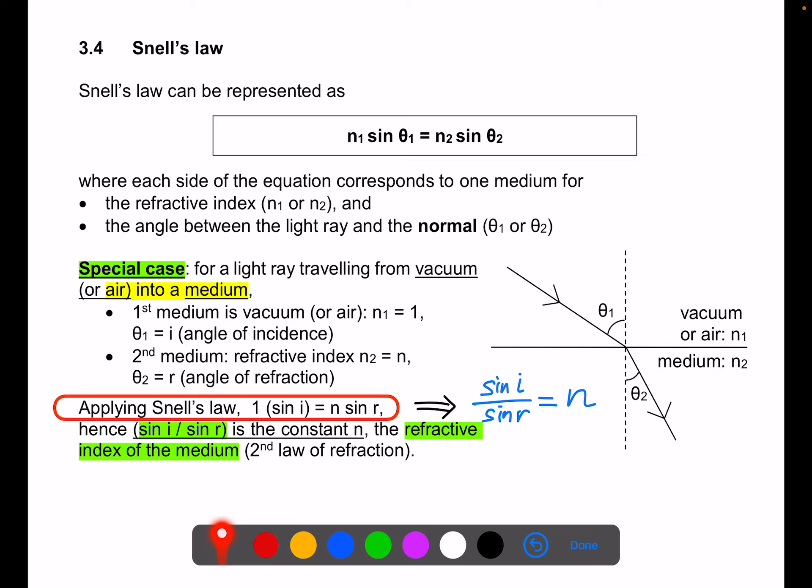And instead of writing theta 1 and theta 2, we'll write angle i for theta 1, angle of incidence, and theta 2 is r, angle of refraction. With all this, the values n1, n2.